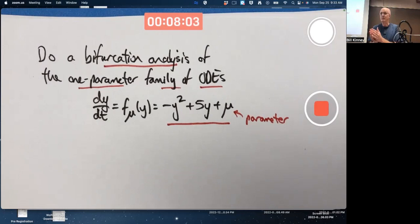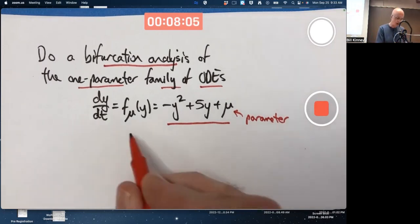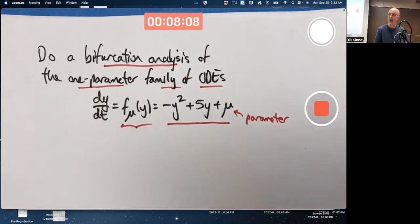And the quickest way to think about it is with phase lines, by drawing the right-hand side function, its graph as a function of y, and using that to help you think about what the phase lines will look like.